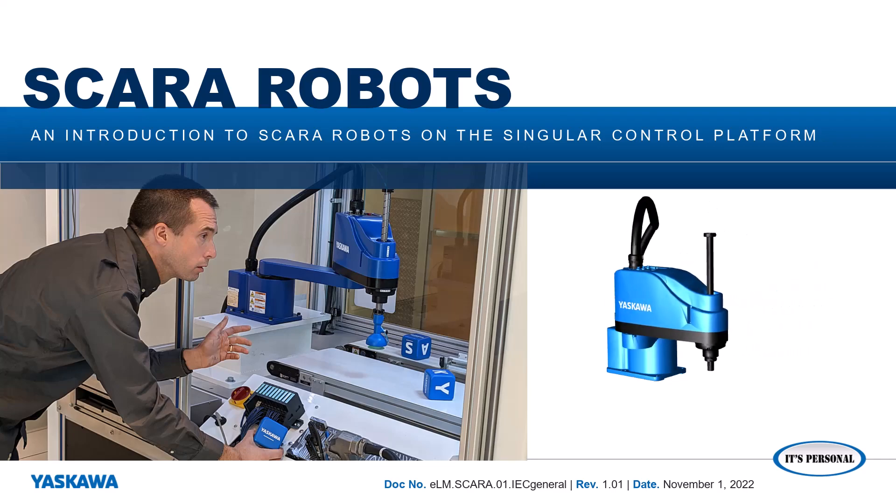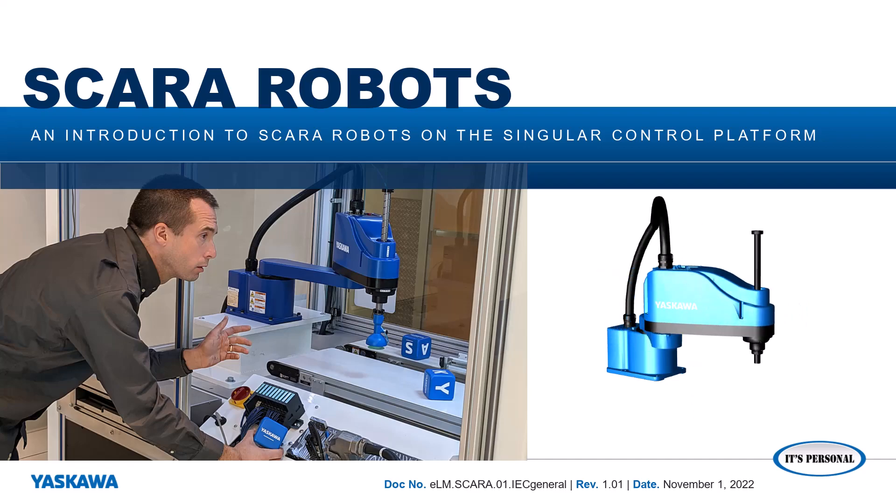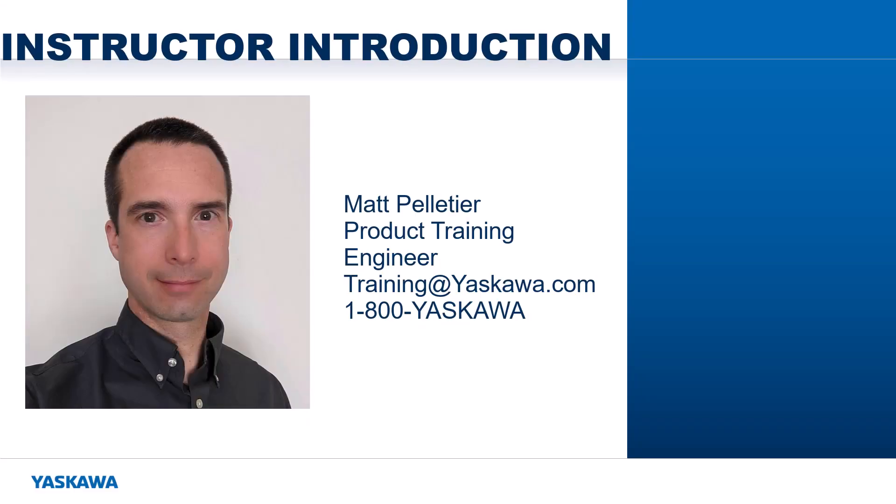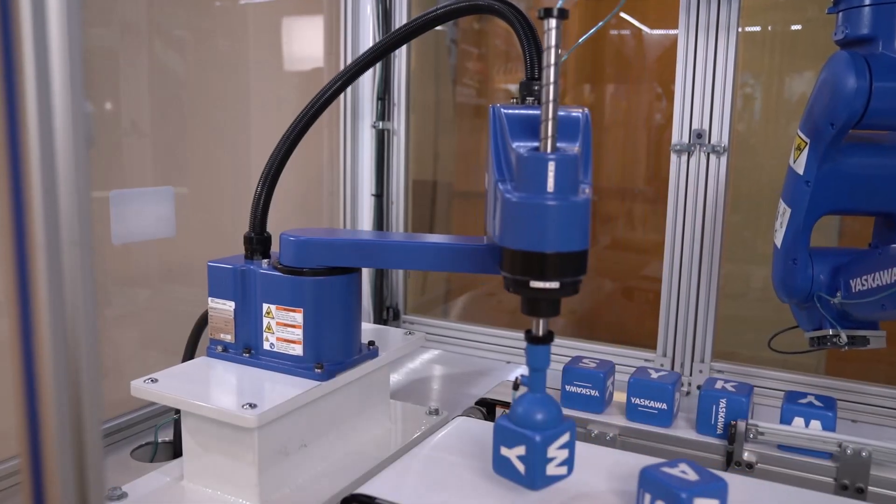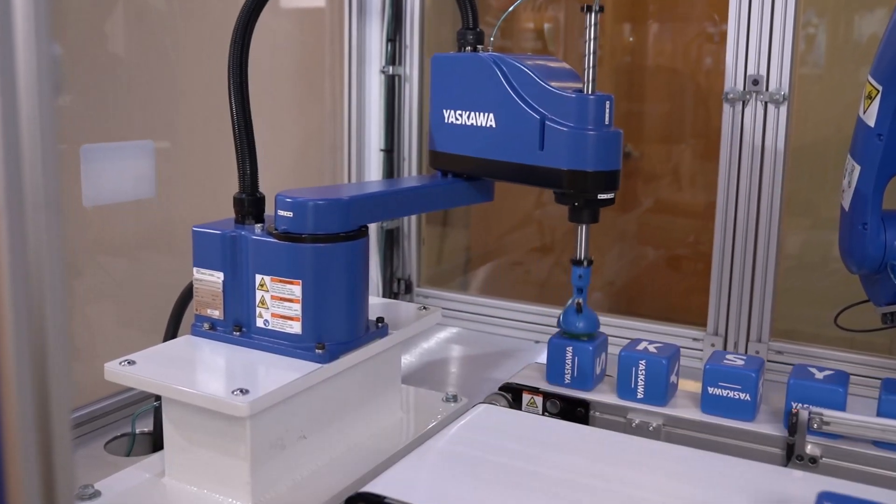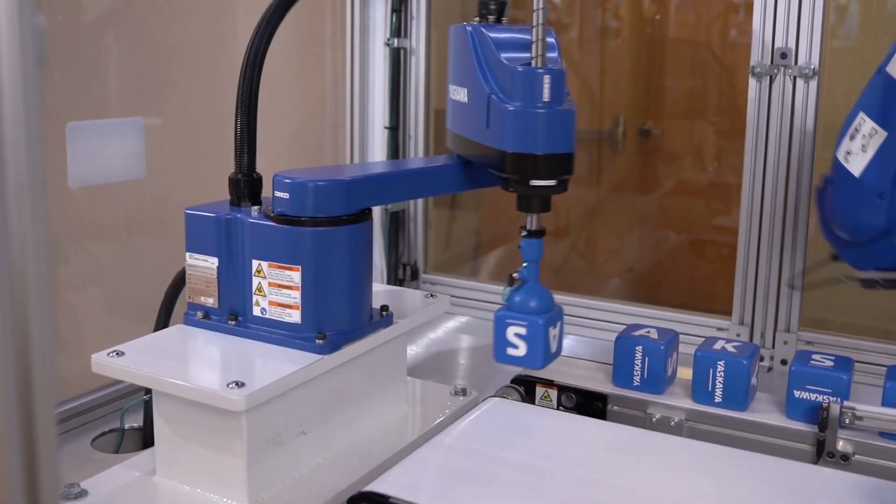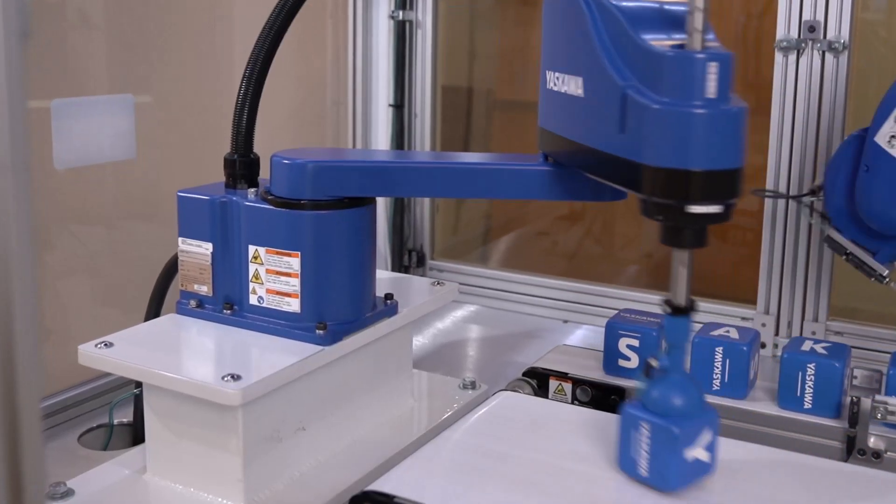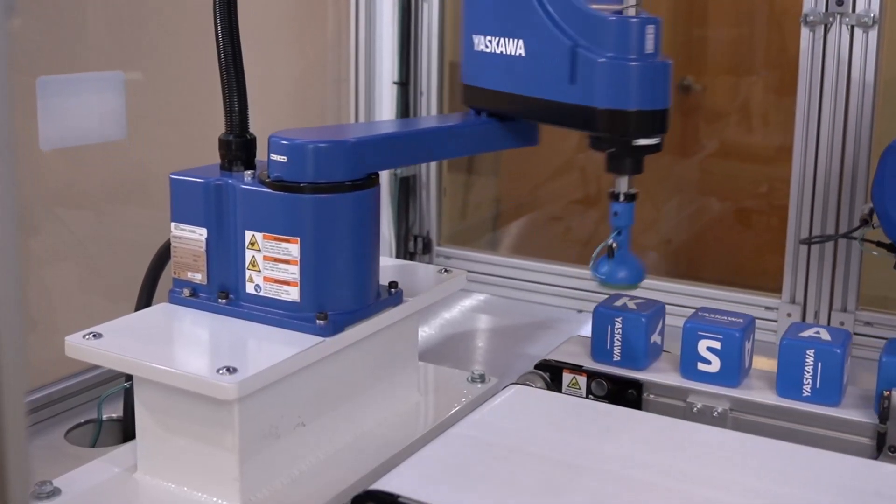In this video, I'll introduce SCARA robots and Yaskawa's SCARA robot product line as used in a singular control system. Hi, I'm Matt Pelletier. The SCARA robot is a mechanism with relatively high speed and high precision used for small part assembly and pick-and-place applications.